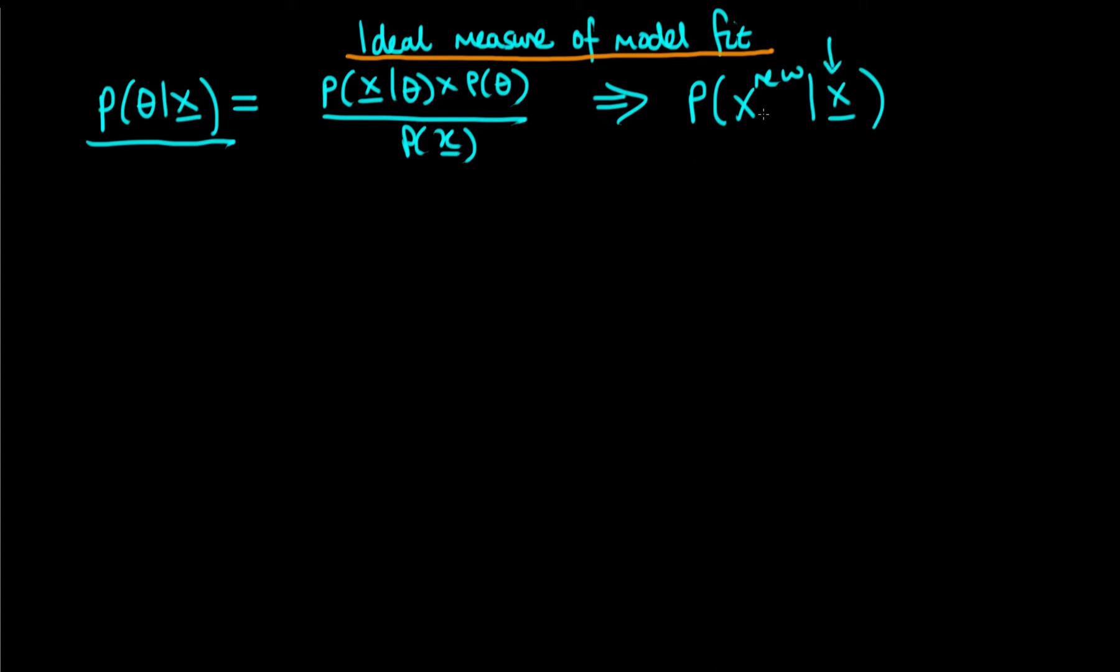And so this distribution here is, in a sense, an approximation to some unknown true data generating process, which I'm just going to write F of X new. And basically what we would like to do is if we ideally knew what F was, we could compare F with our posterior predictive distribution.